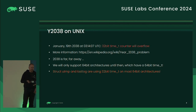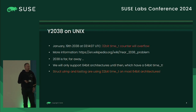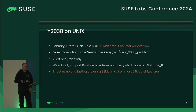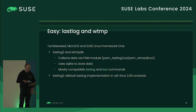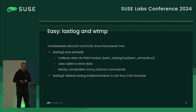That's not entirely true, because for utmp, lastlog, wtmp, and many more structs, 32-bit time_t is used even on 64-bit architectures for binary compatibility. We solved lastlog and wtmp with an sd-collect database and PAM modules which collect all data. We have mostly compatible lastlog and last commands — only mostly compatible, because if we made them fully compatible we would inherit all the design deficits of lastlog again, which we didn't want.